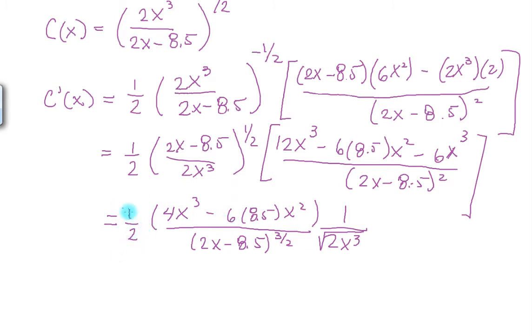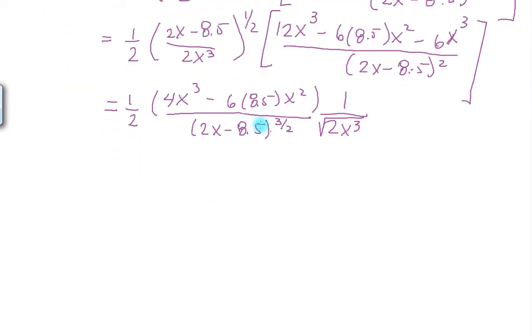Now, this equal to 0 means that the numerator has to be equal to 0. We can still simplify this 1 half into both terms. In the top, we have 2X cubed minus 3 times 8.5 X squared, square root of 2X cubed, 2X minus 8.5 to the 3 halves. Perfect.